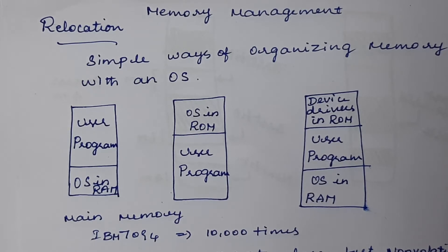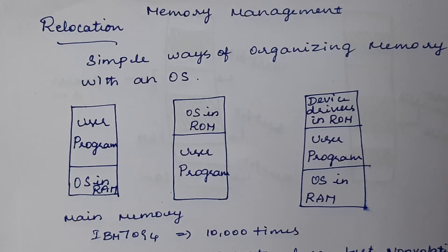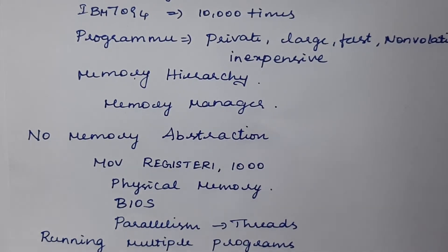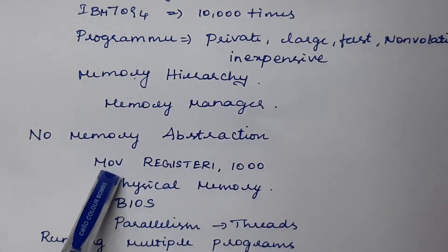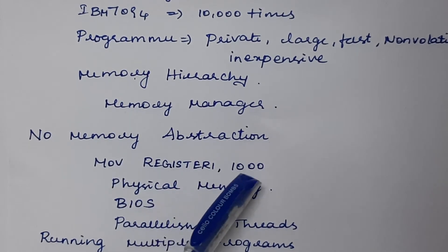The part of the operating system that manages the memory hierarchy is called the memory manager. Its job is to efficiently manage memory: keep track of what memory is in use, allocate memory to incoming processes, and deallocate it when they complete. In earlier systems without proper memory abstraction, only hardware-level instructions were used, such as MOVE register, 1000.